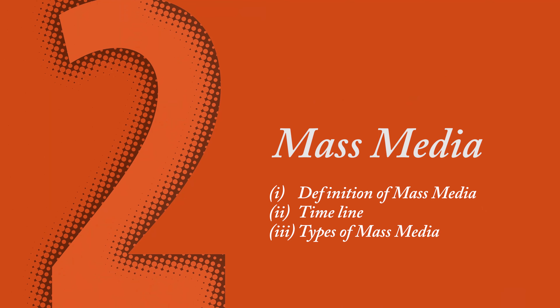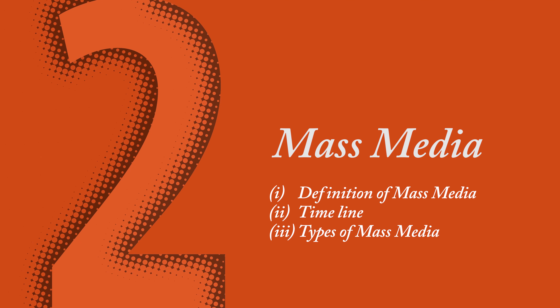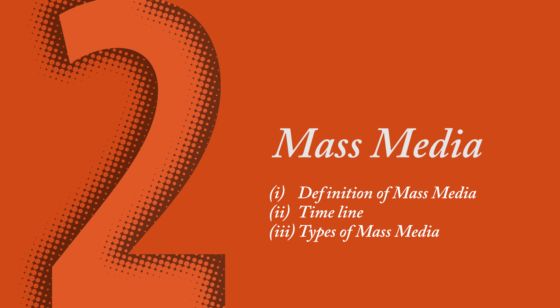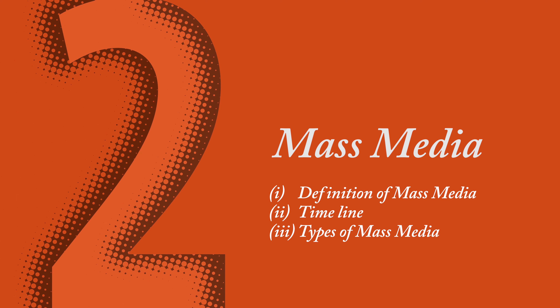Your priority should be to create interest and excitement in the class when you start. So rather, begin your year with chapter 2, which is mass media. Here you have a lot to discuss, show and share with students — the actual types of mass media: print, TV, radio, internet, cinema. You can take them on an exciting journey of how media evolved from the first print to today's WhatsApp and social media.